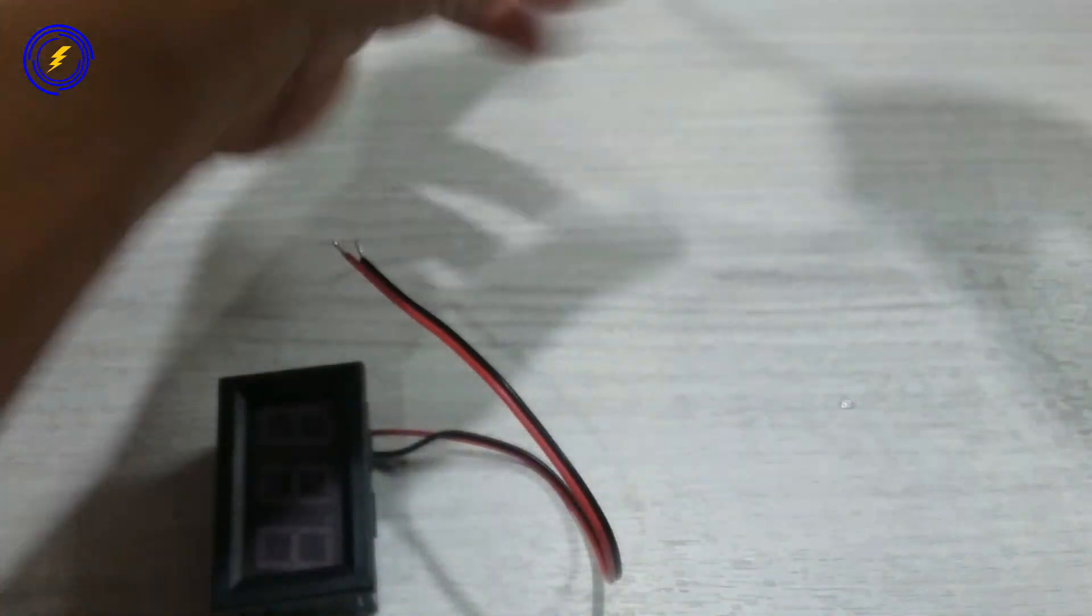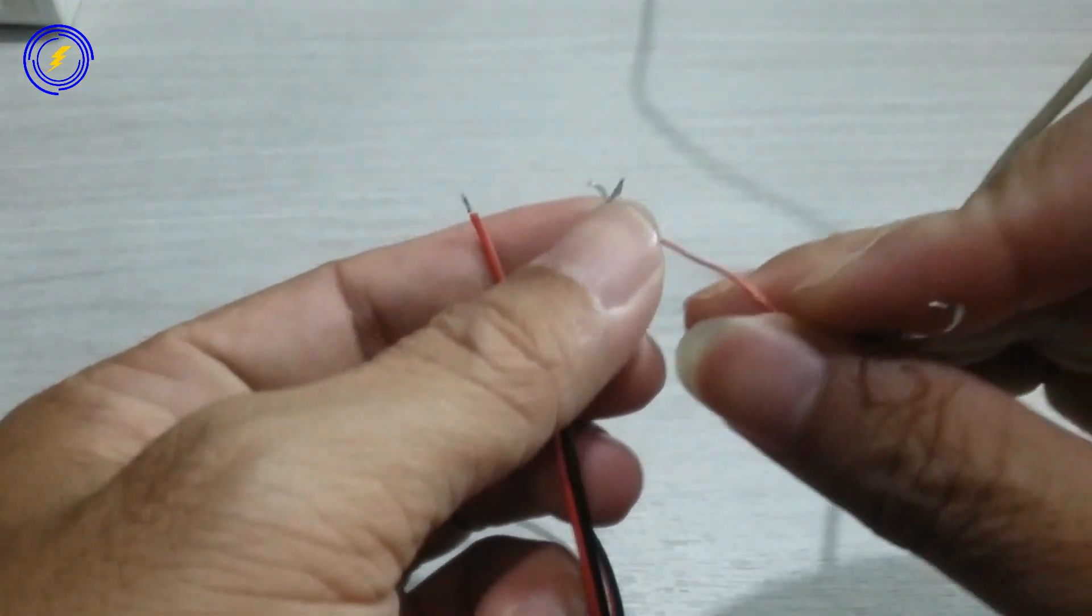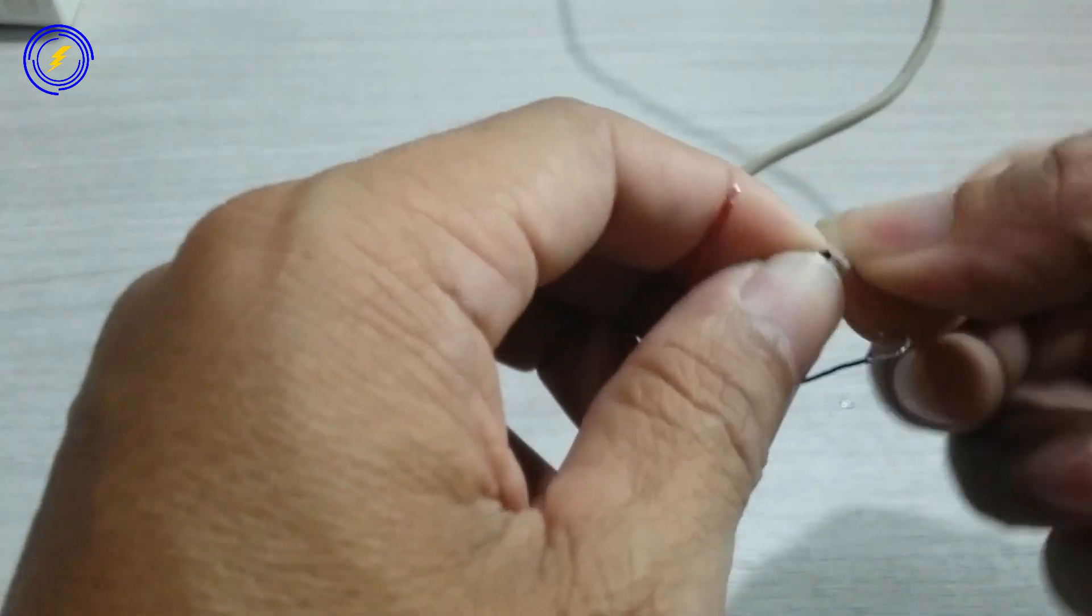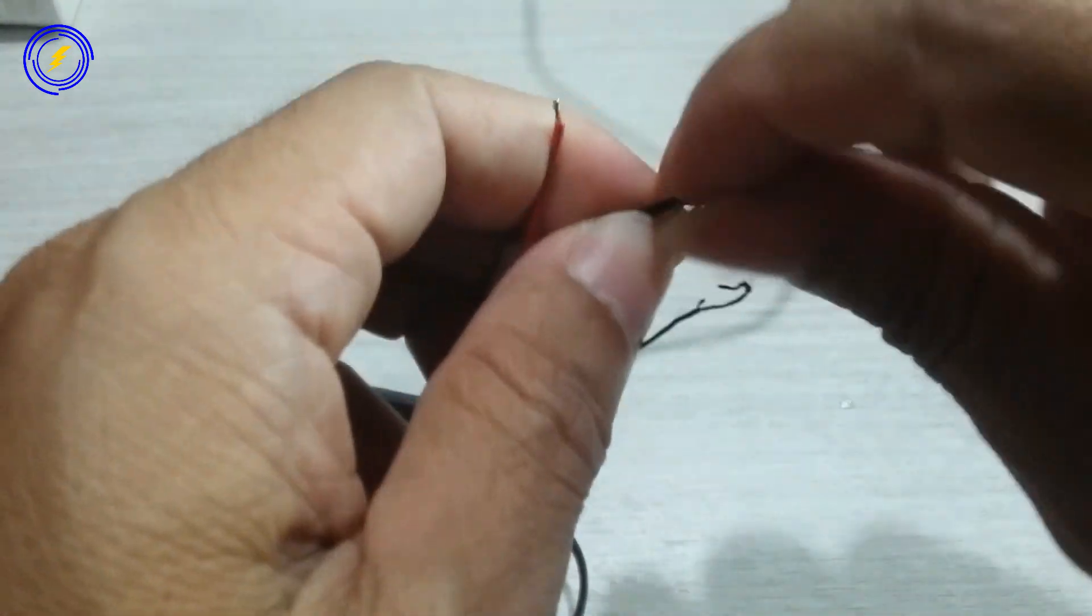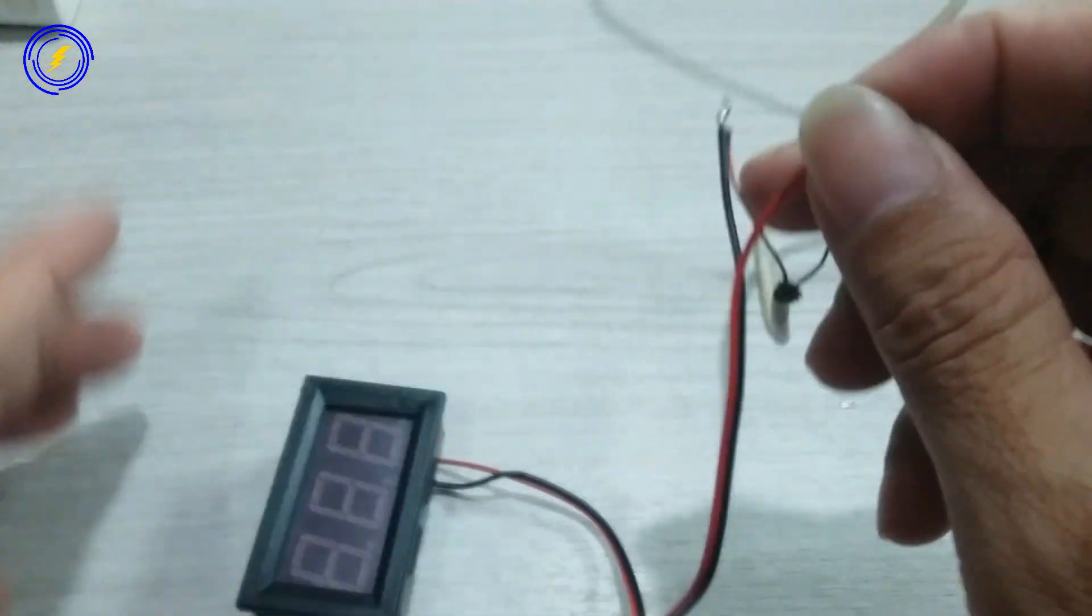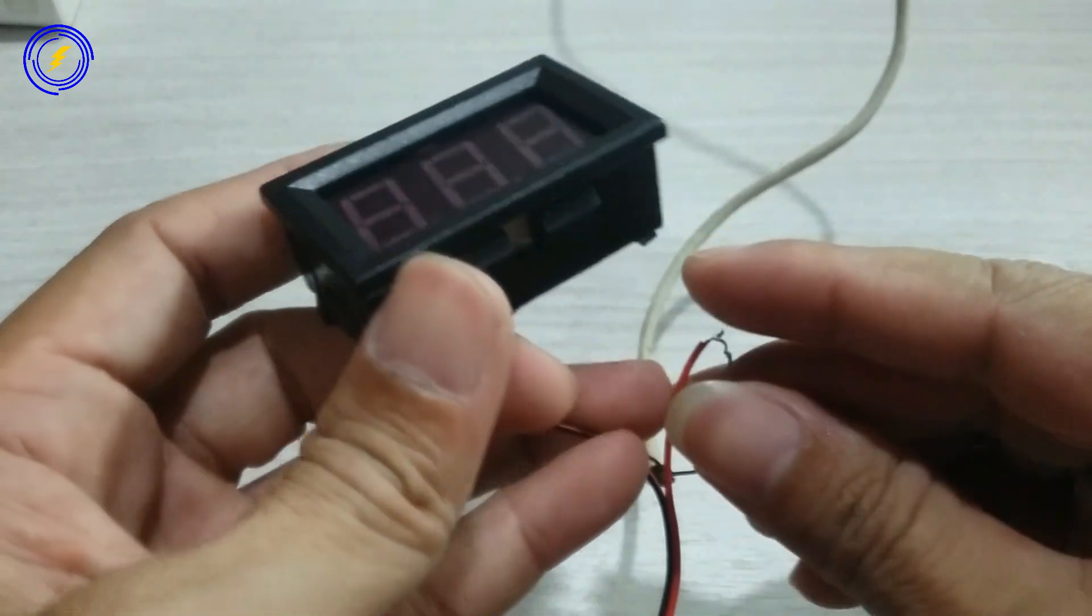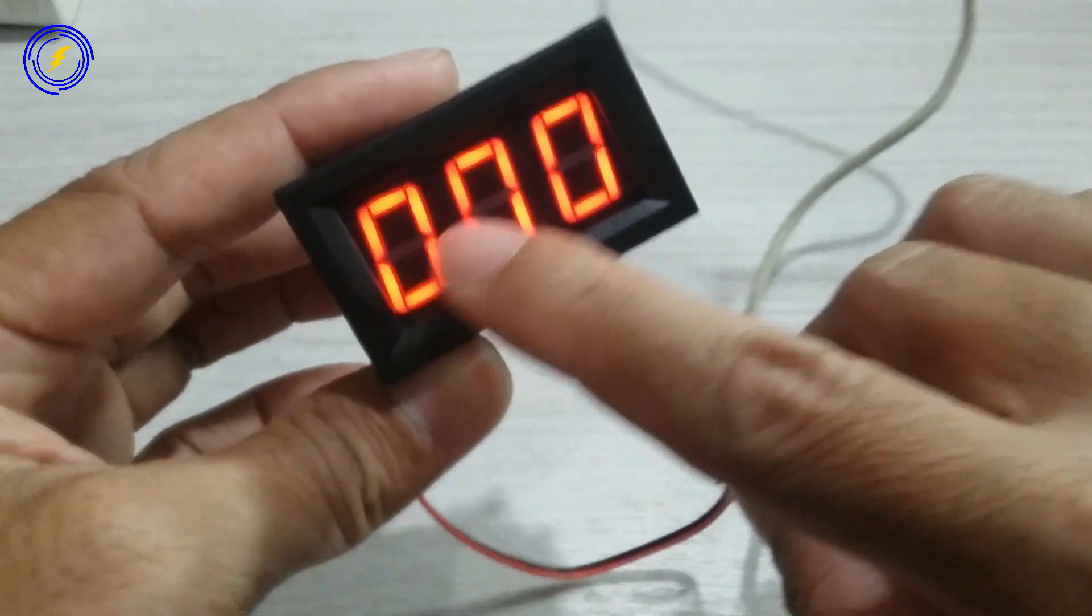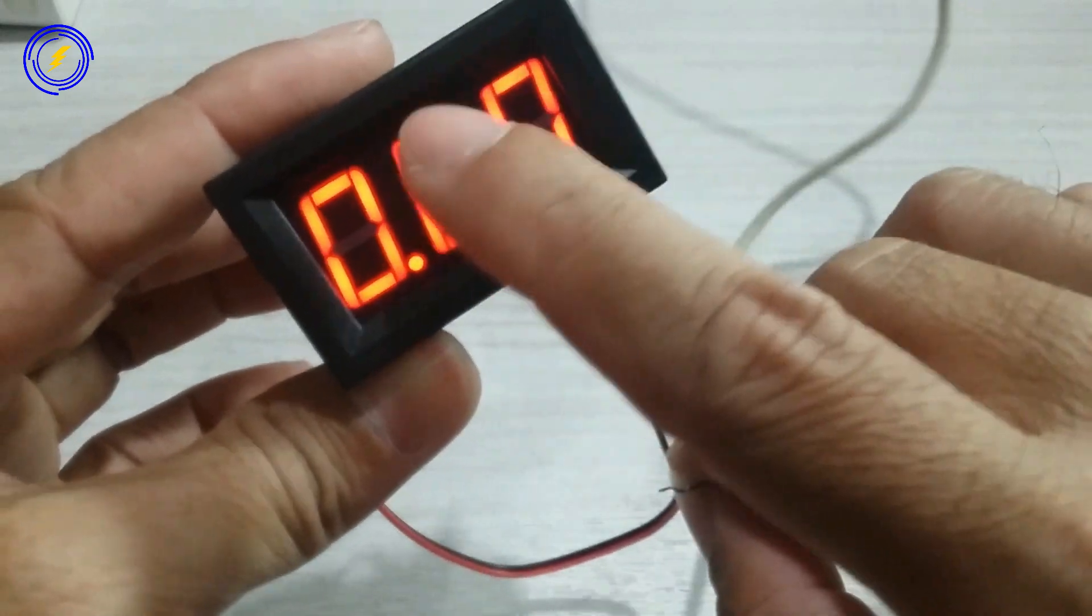Kita sebelumnya akan coba dulu setelah kita copot resistor SMD-nya. Hanya bertuliskan 0, 0, 0 angkanya. Tidak ada angka yang lain.